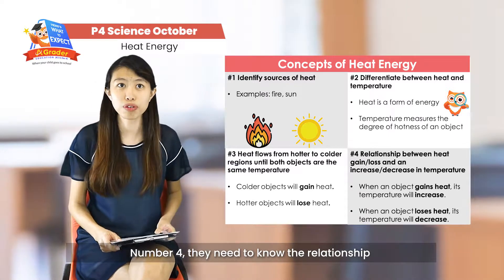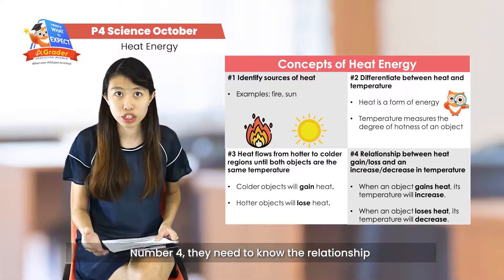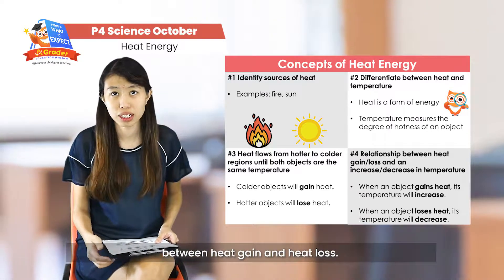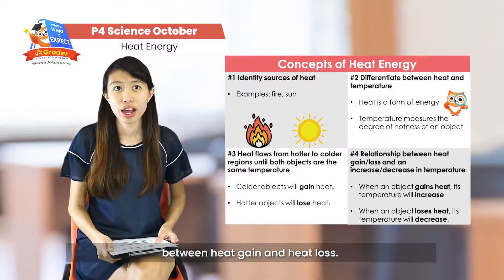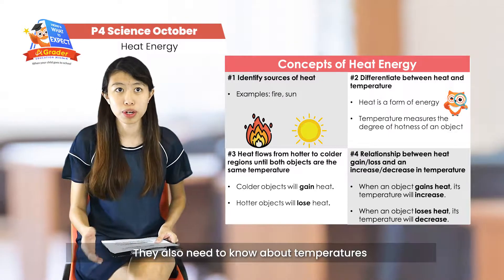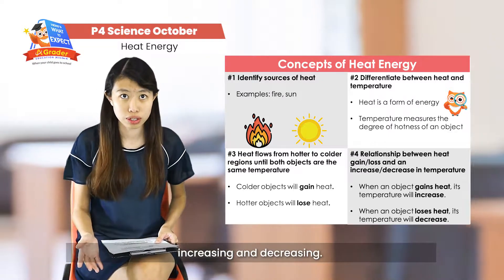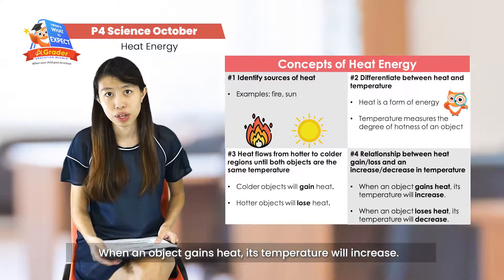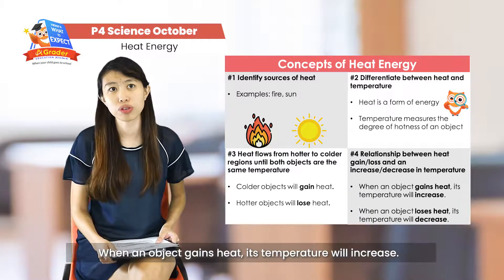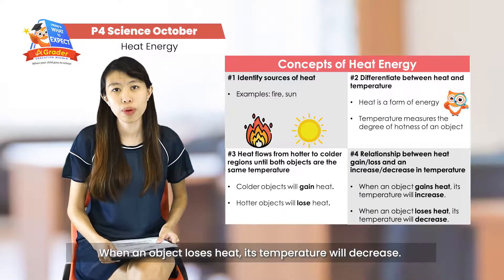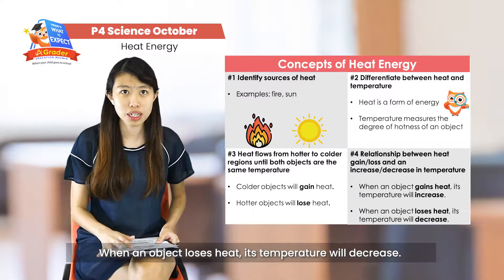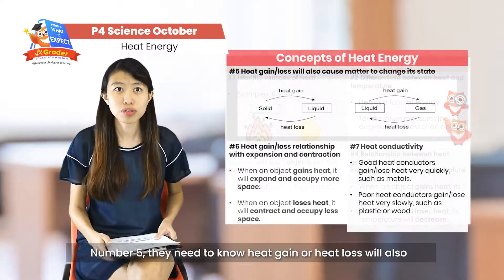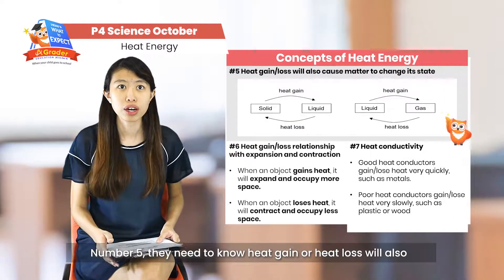For number four, they have to know the relationship between heat gain, heat loss, and temperature — whether they increase or decrease. So when an object gains heat, its temperature will increase. When an object loses heat, its temperature will decrease.